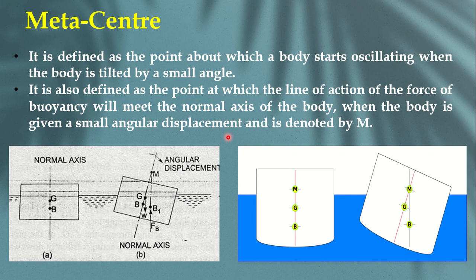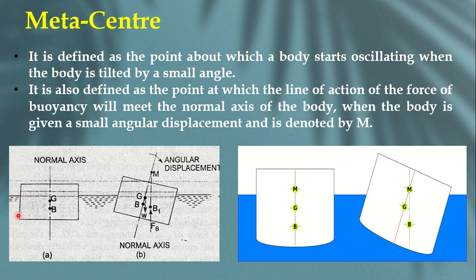The meta center is an important parameter when studying floating bodies. When you throw an object into a liquid, it floats — some part gets submerged and the other part is open to atmosphere. Meta center is especially relevant for floating bodies. It is defined as the point about which a body starts oscillating when the body is tilted by a small angle. Observe this diagram: I have a rectangular object, some part submerged in water and some part open to atmosphere.